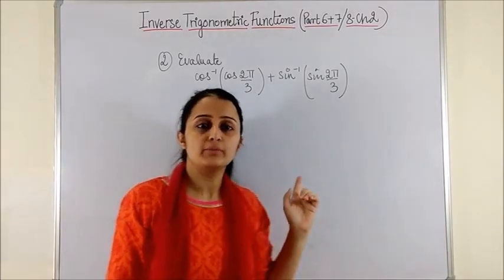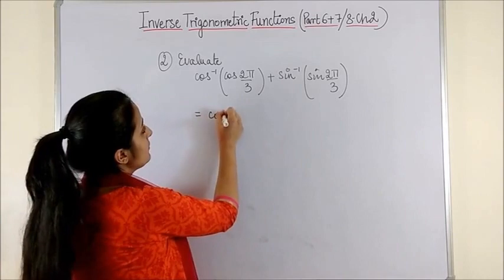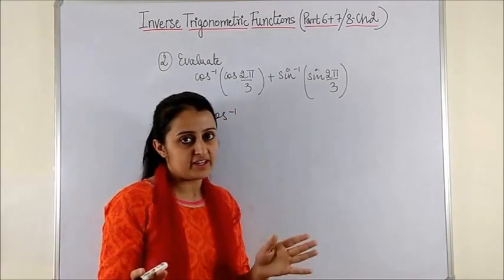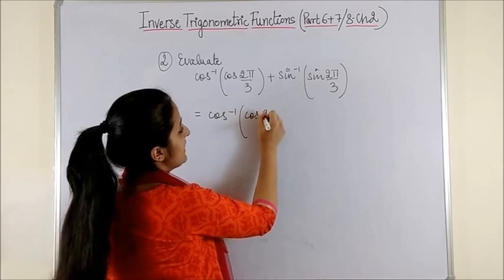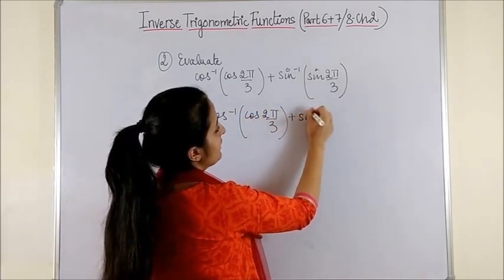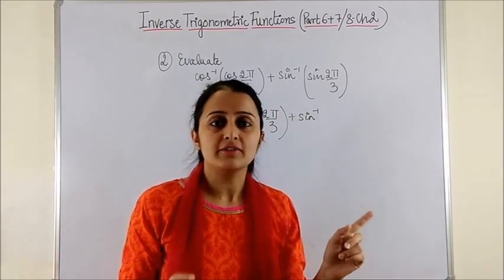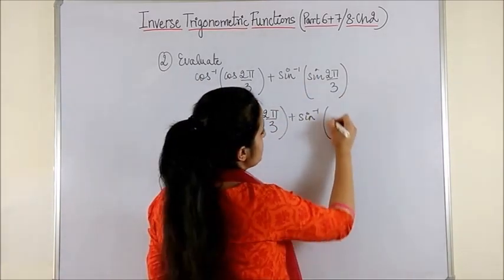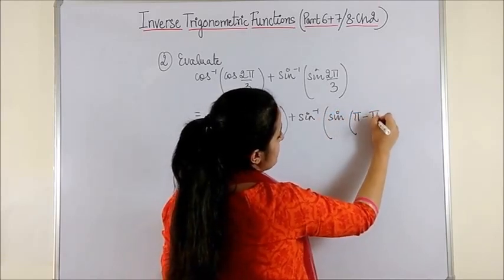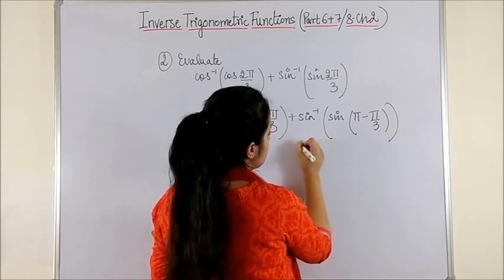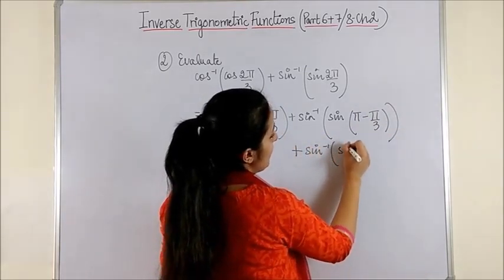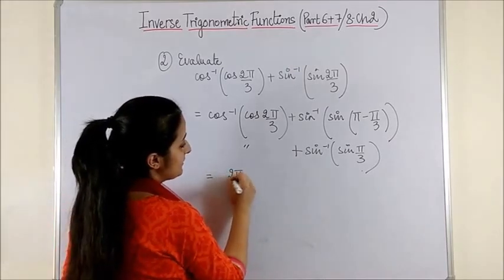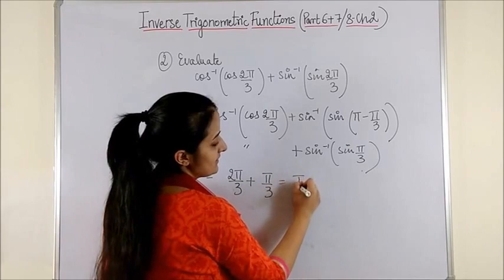Once again, one more question dealing with your principal value branch. The PVB for cos inverse is the closed interval [0, π], so 2π/3 perfectly fits in there — this one could be written as it is. However, the PVB for sine inverse is the closed interval [−π/2, π/2], so we would have to bring this angle to its PVB, for which we express 2π/3 as π minus π/3, which gives us sine of π/3. So cos inverse(cos 2π/3) gives us 2π/3, and this one gives us π/3, and the answer is π.